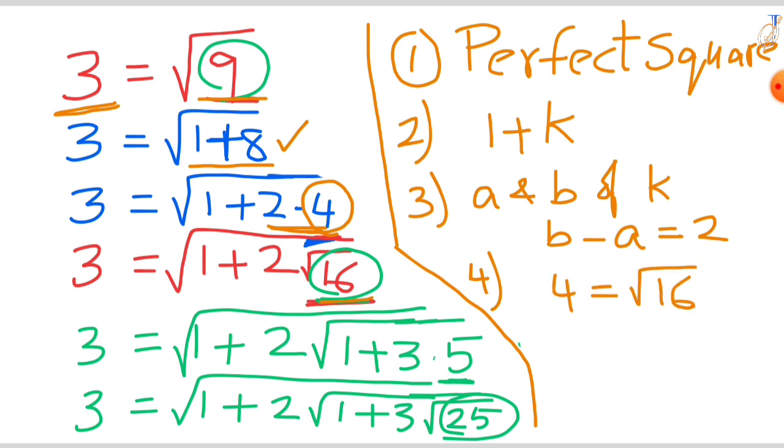Again we repeat the process. This is a perfect square, so our first step is done. Then again, this 16 we write in the form of 1 plus 15. That is in the form of 1 plus k. Our second step is done. And then the end number, that is 15, we find the factors and the difference is 2.